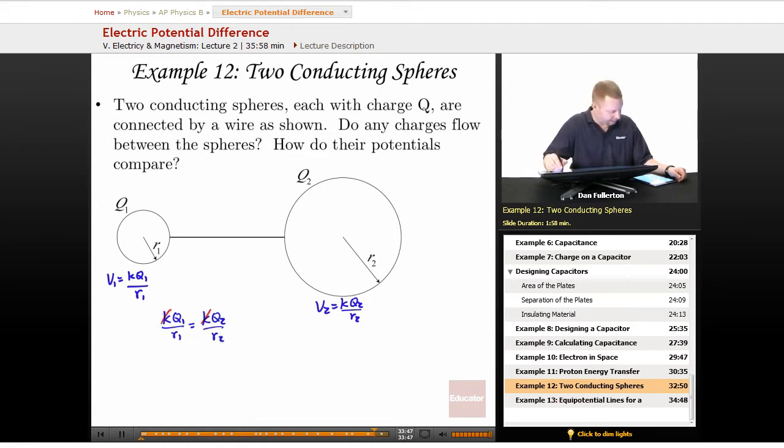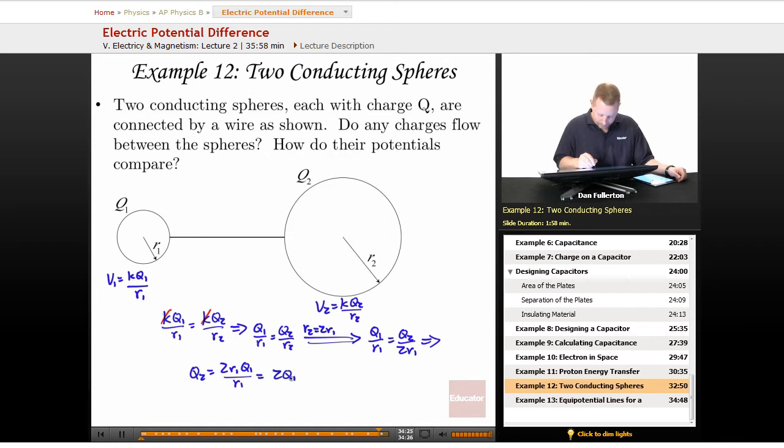Divide K out of both sides. Therefore, Q1 over R1 equals Q2 over R2. And since we know that R2 is going to be twice R1, measuring those lines, we could figure that out. Then Q1 over R1 must equal Q2 over 2R1, or a little bit more rearrangement to say that Q2 must equal 2R1, Q1 over R1. Or that's going to be just 2Q1.